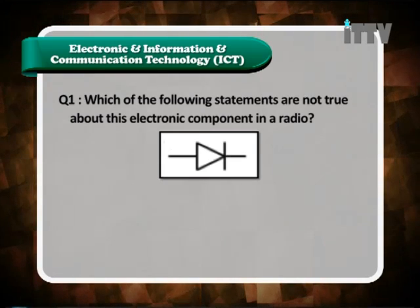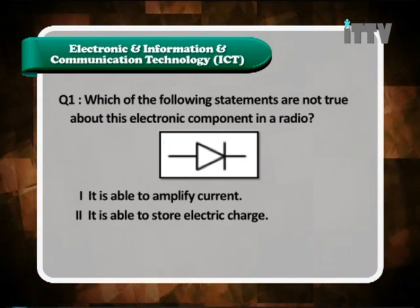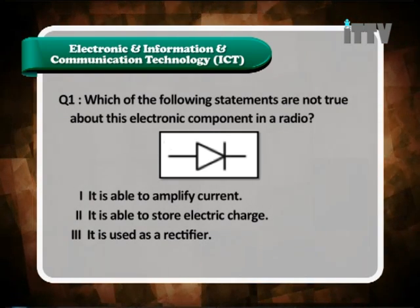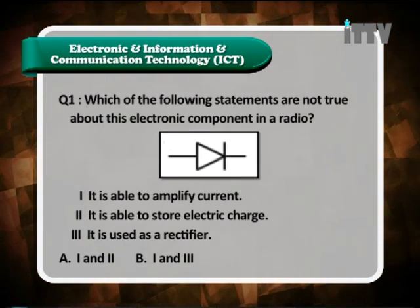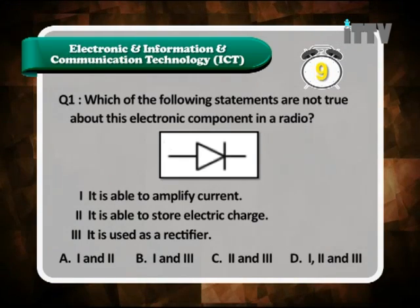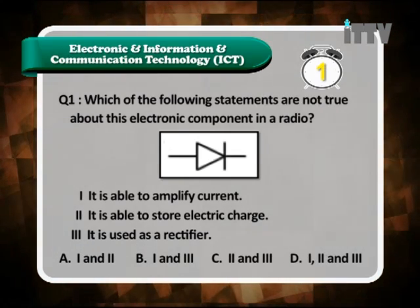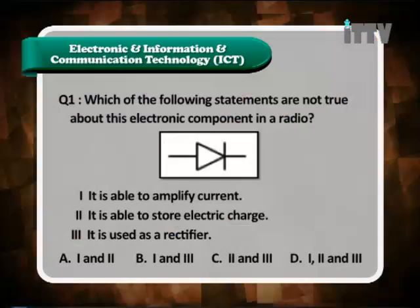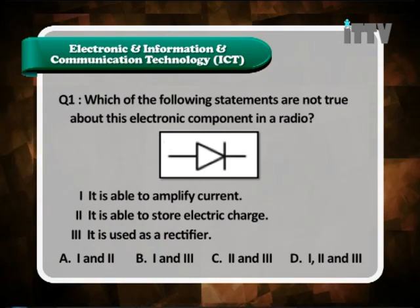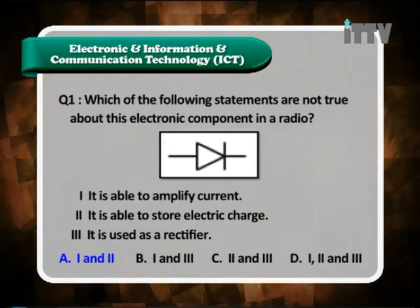Question 1: Which of the following statements are NOT true about a diode? 1. It is able to amplify current. 2. It is able to store electric charge. 3. It is used as a rectifier. Options: A. 1 and 2, B. 1 and 3, C. 2 and 3, D. 1, 2 and 3. The function of a diode is to act as a rectifier. Statements 1 and 2 are not functions of a diode, so the answer is A — 1 and 2.